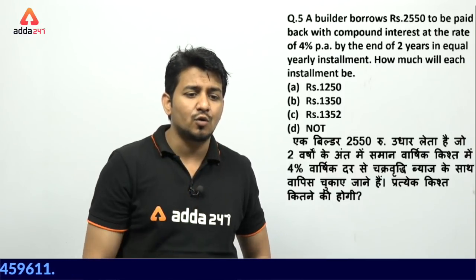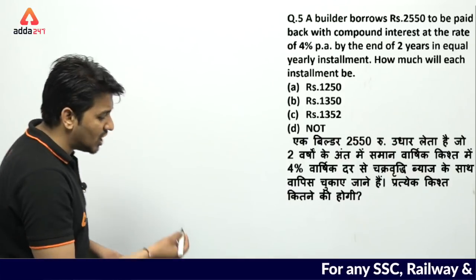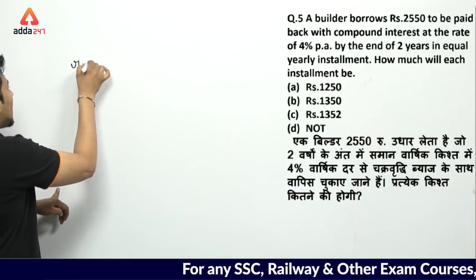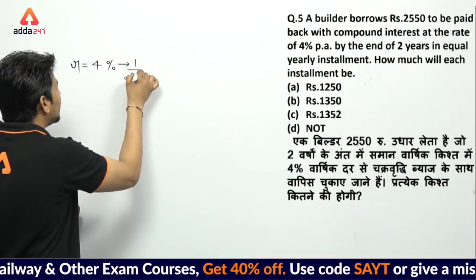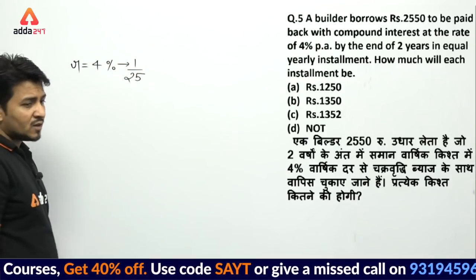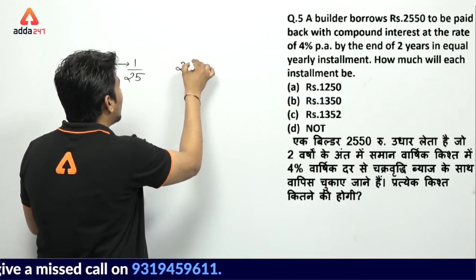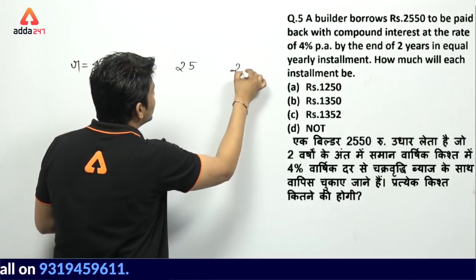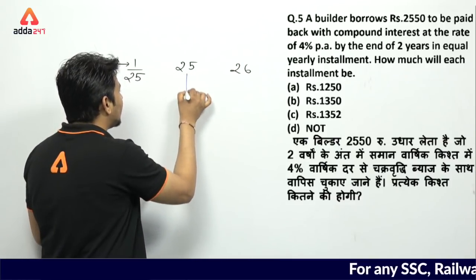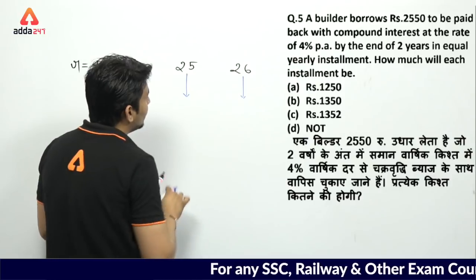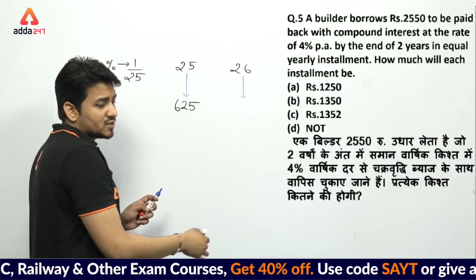Nothing new — follow the same method as taught. Rate is 4%, and the fraction value of 4% is 1/25. So the first year ratio is 25:26. For the second year, write the squares: 25² = 625 and 26² = 676. Installment is 26 in the first year and 676 in the second — these are not equal.